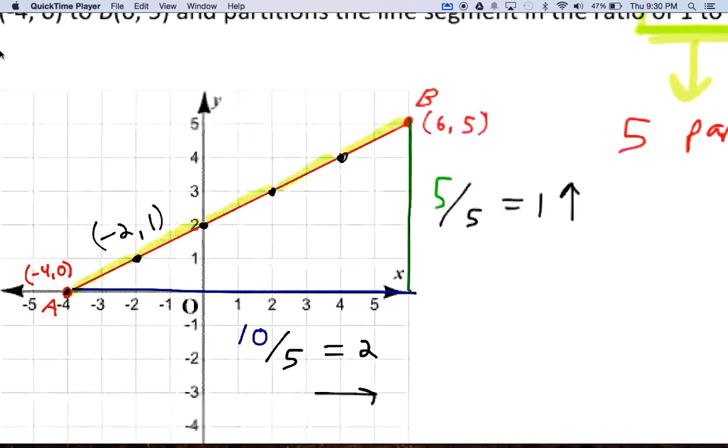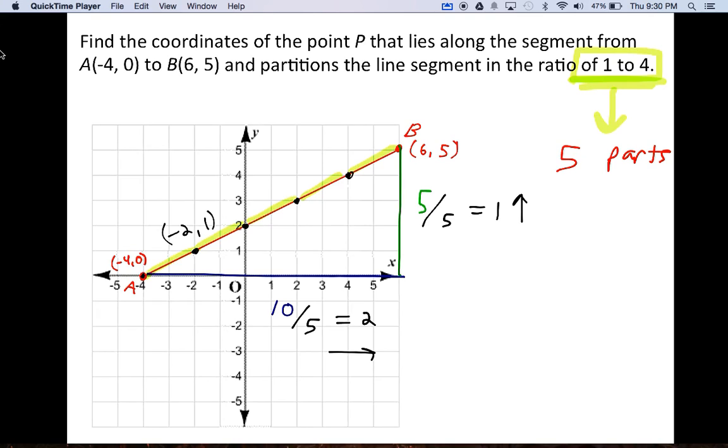But the bottom line is, we need to find the total number of parts, and then divide the horizontal and the vertical distance by that number of parts. And that'll tell us how many up and over to go. Let's try a few practice problems in the next videos.